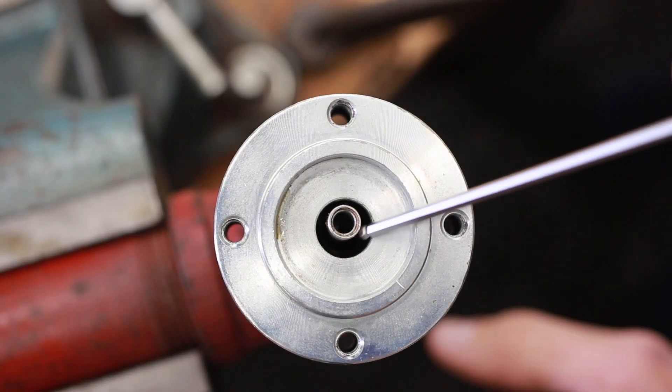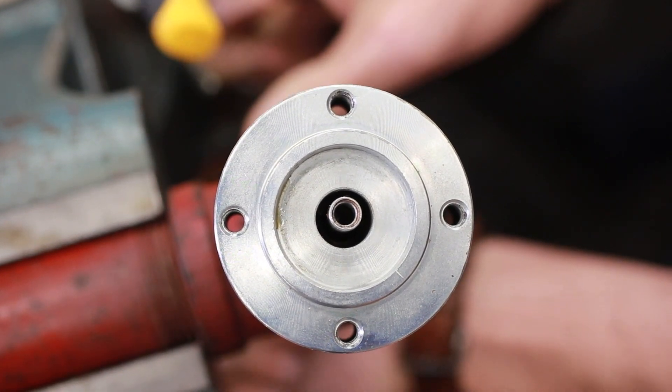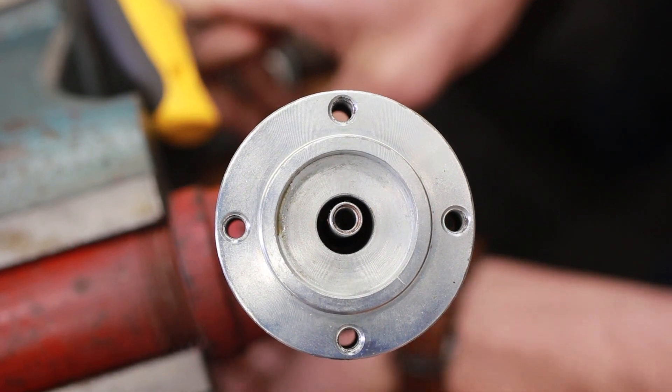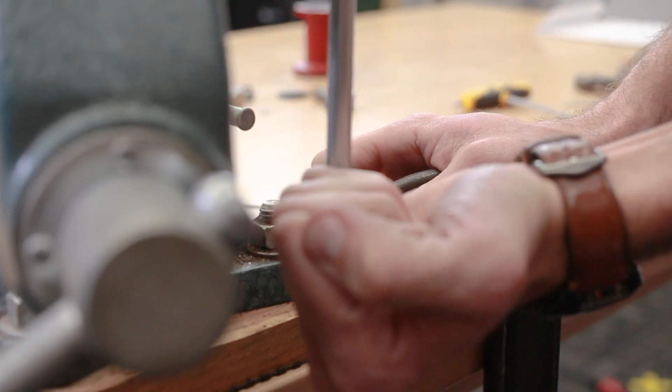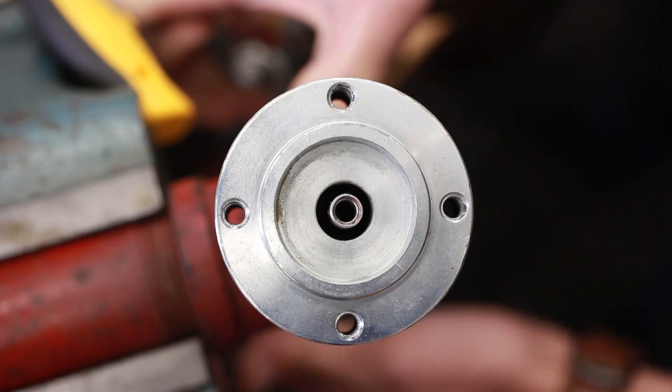Check the concentricity between the low expansion rod hole and the base. If the low expansion rod is not centered, tap or push the rod gently with your hand until you find concentricity.